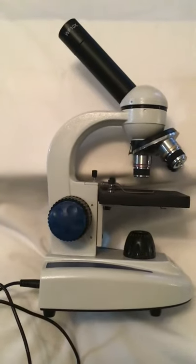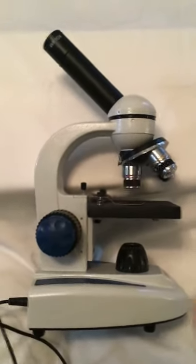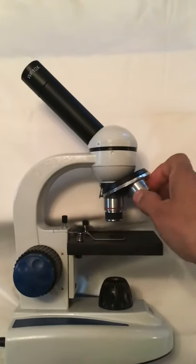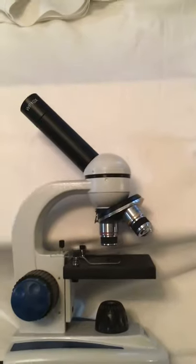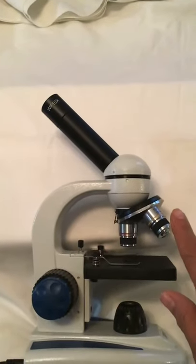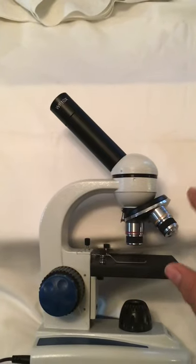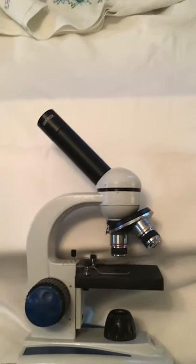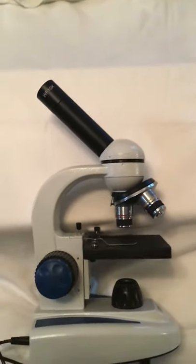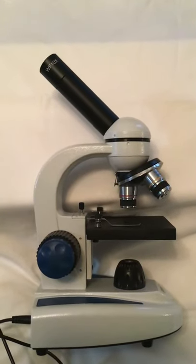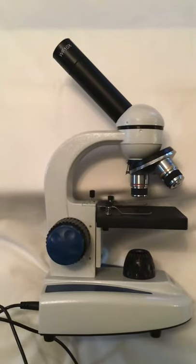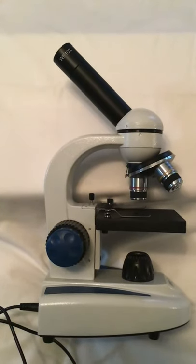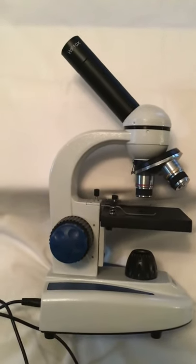This compound microscope gets its name because it has multiple lenses in order to see things that are difficult to see with the naked eye. It has a scanning lens, a low objective, and a high objective lens. The low objective lens increases the magnification, and the high objective increases it to where you can see even the smallest structures or the basic structures of a cell.